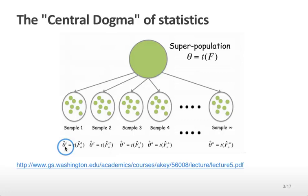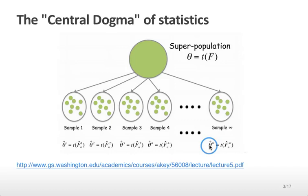We can estimate that parameter in the population by estimating that same parameter in these samples. For example, we take the mean in sample 1, the mean in sample 2, and use those as estimates of the mean in the overall population. The mean might be different in each of these different subsamples, but overall on average it will represent well the mean in the overall population.